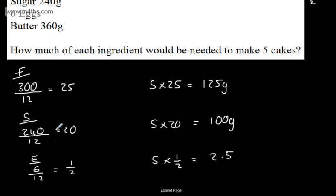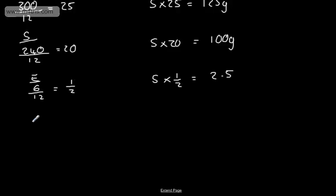If we now look at the butter, we've got 360 grams. So 360 divided by 12 gives us 30. So what we need to do then is do 5 times by 30, and that's going to give us 150 grams.